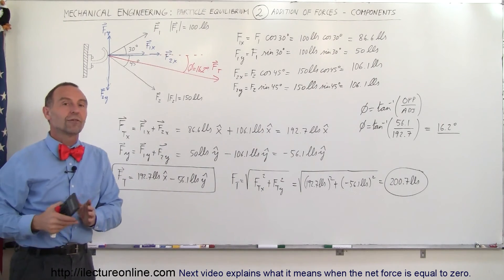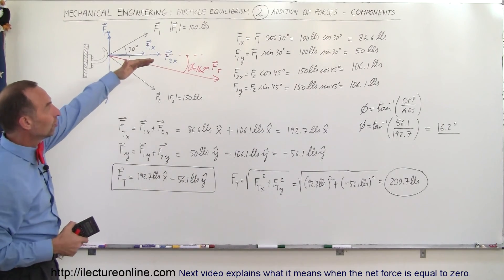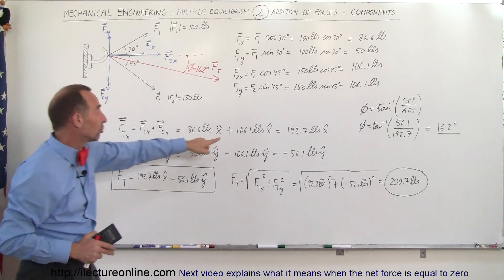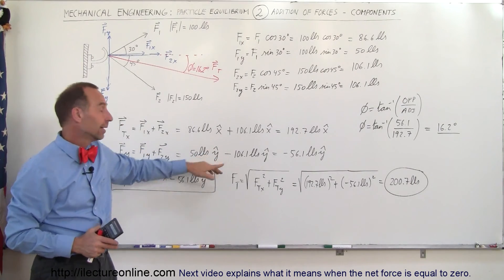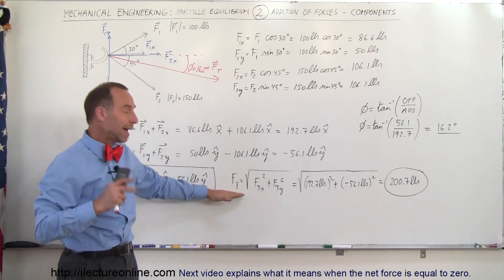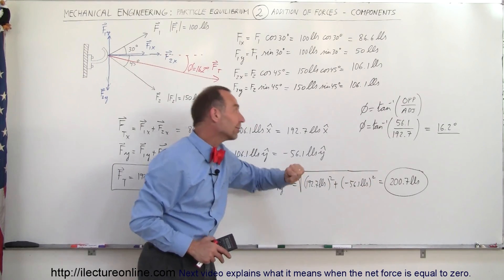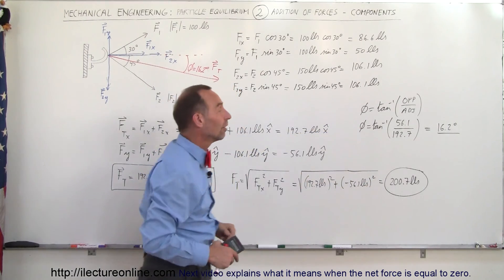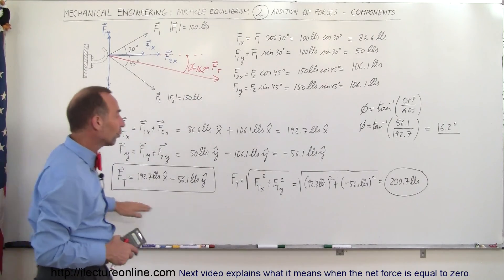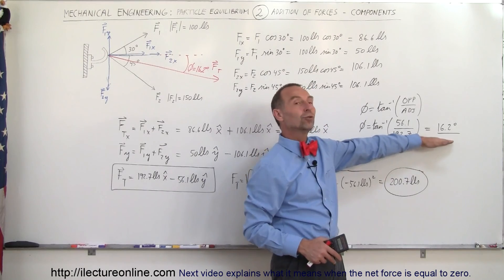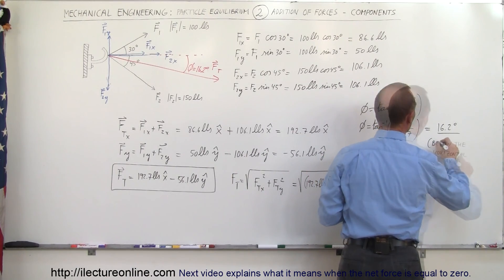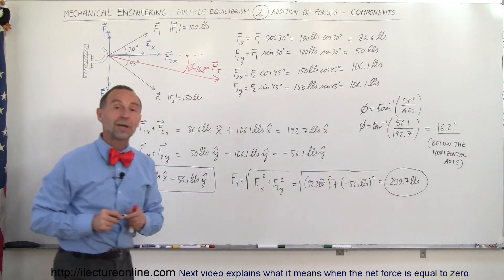This is how we add forces vectorially: we find the X and Y components of each force, then add all the X and all the Y components — making sure we have the correct sign. Then we find the total force in terms of X and Y components. To find the magnitude, use the Pythagorean theorem. Then find the reference angle to whatever reference plane you want. That gives us a total force of 200.7 pounds at 16.2 degrees below the horizontal axis. And that's how we add vectors.